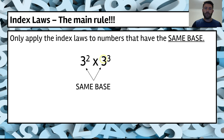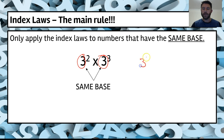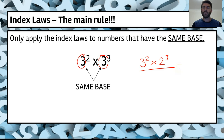So you can see here we've got 3 squared times 3 to the power of 3. When we're applying these laws, the bases have to be the same. Something like 3 to the power of 2 multiplied by 2 to the power of 3 — we wouldn't be able to apply the laws to that. We can still calculate it because we've got numbers, but we can't use the laws to simplify it.